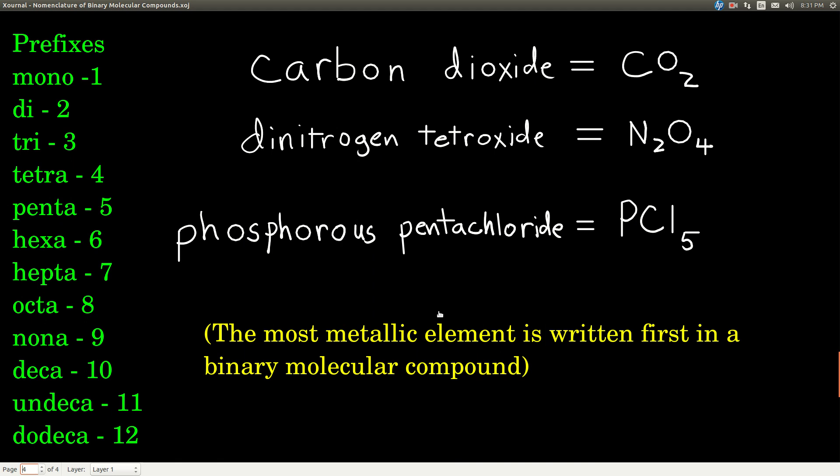By the way, when you're writing the formula for a binary molecular compound, the most metallic element is always written first, and the less metallic is written second. In the periodic table, elements become less metallic as you go up and to the right. So the element that's furthest down and to the left will be the first one, and the one that's most up and to the right in the periodic table will be the second one.